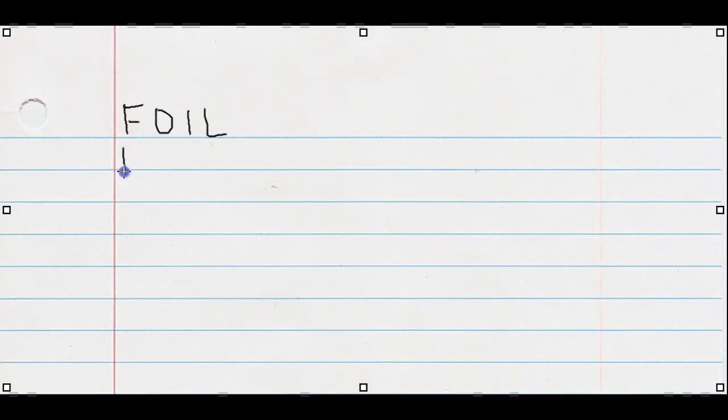FOIL, the one we're going to do in this problem, in this video, is 17 times 15, and the first thing we always do is put them in expanded notation. So 17 in expanded notation is 10 plus 7, and 15 in expanded notation is 10 plus 5.